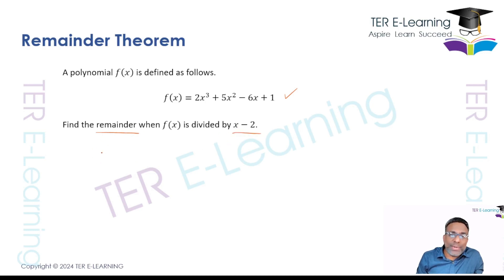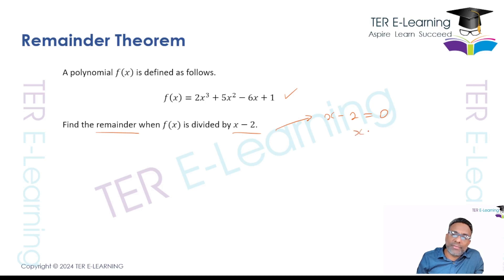There are two ways to work a problem like this. The first way is very straightforward. Since you are dividing by x minus 2, all we need to do is put x minus 2 equal to 0, and therefore x is equal to 2. Then we're going to substitute 2 into that function.